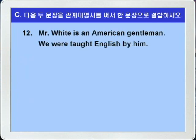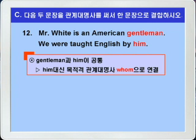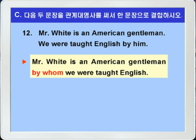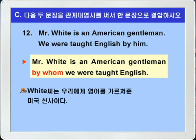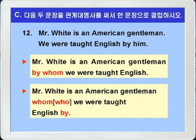12번입니다. Mr. White is an American gentleman. We were taught English by him. White 씨는 미국 신사이다. 우리는 그에게서 영어를 배웠다. 두 문장에서 공통되는 것은 gentleman과 him입니다. 따라서 선행사는 an American gentleman이 되고 by him을 by whom으로 바꿔서 연결시키면 됩니다. Mr. White is an American gentleman by whom we were taught English. White 씨는 우리에게 영어를 가르쳐주신 미국 신사분이시다. 전치사 by를 뒤로 보내면 Mr. White is an American gentleman whom we were taught English by 이런 형태도 가능합니다.